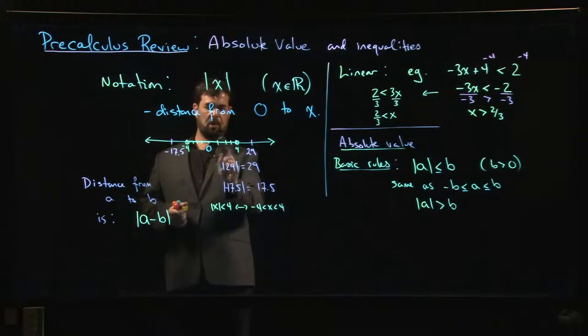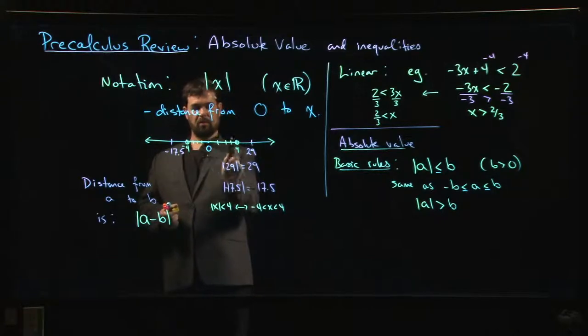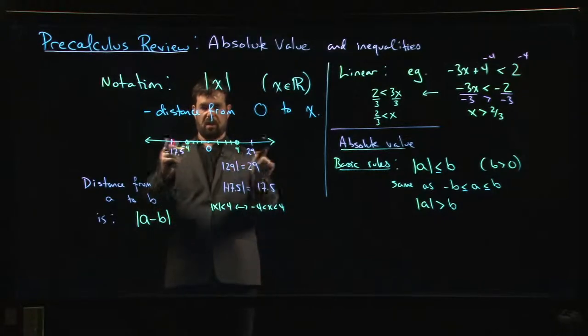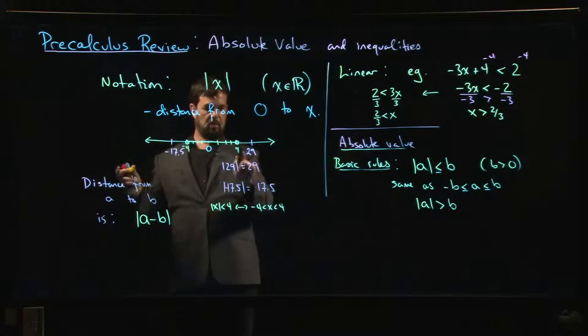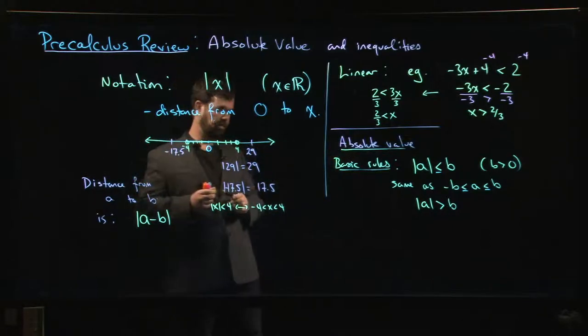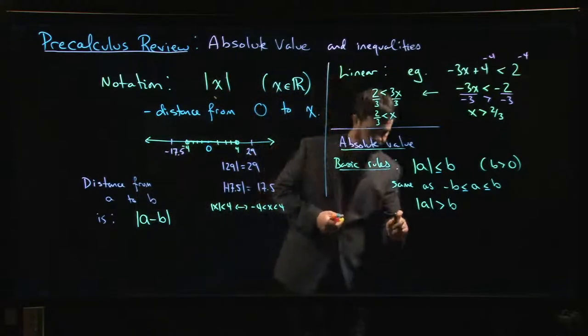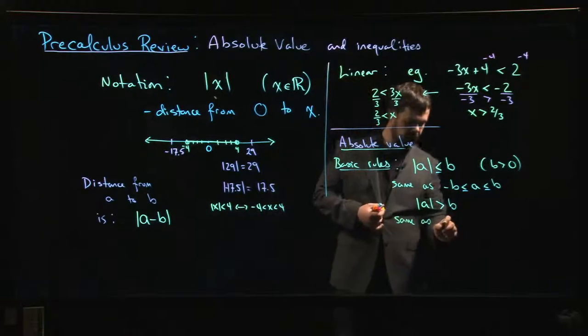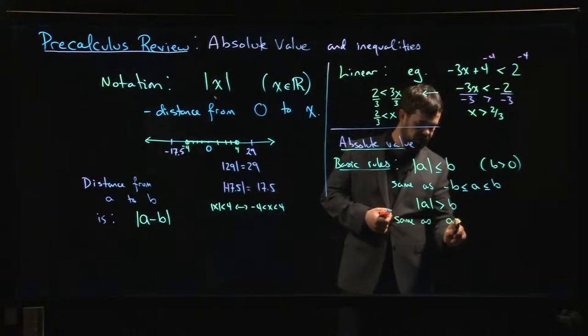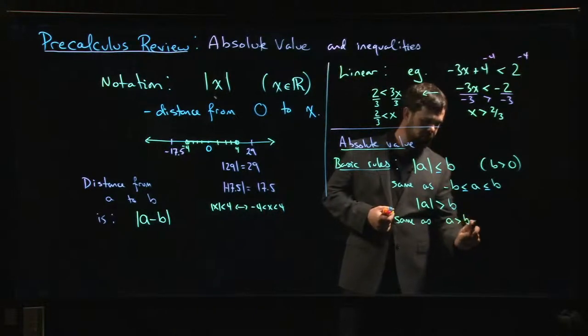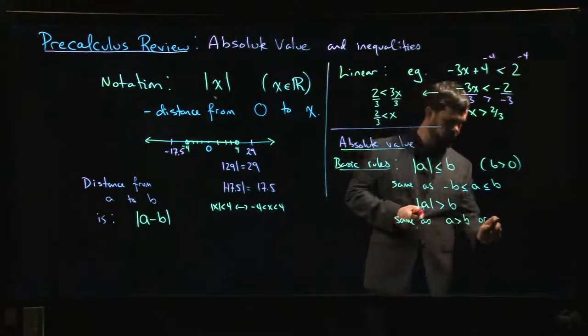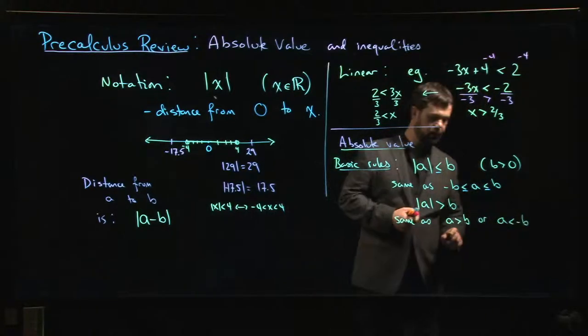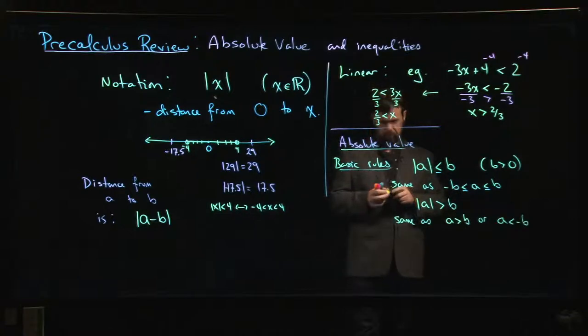That means the distance from 0 has to be more than 4. So I'm not including these numbers. In fact, I'm including everything else. So it's everything outside that interval. So that would mean everything that's bigger than 4 or smaller than minus 4. So this would be the same as saying that a is bigger than b or a is less than minus b.